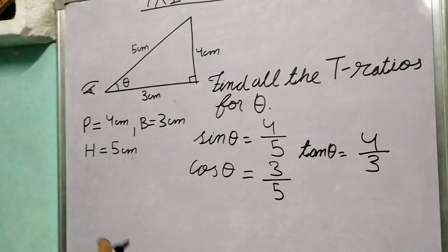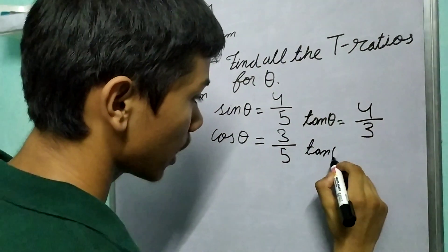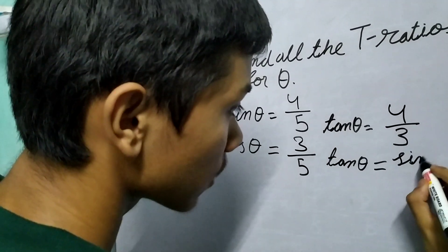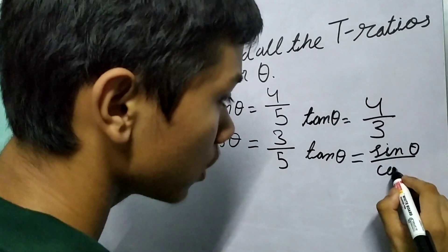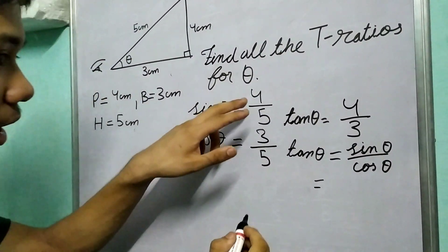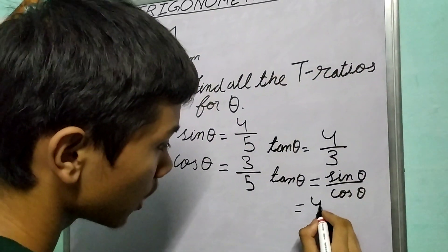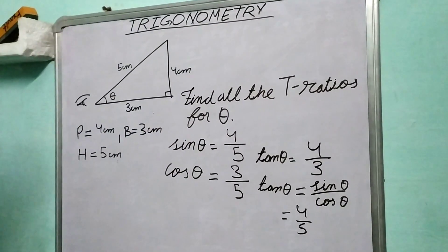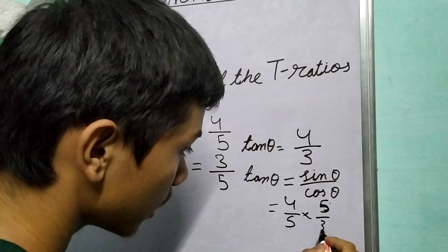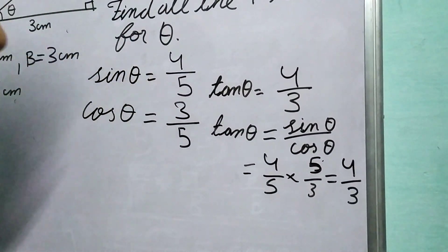Now another thing that we could have done is using the property we just derived. Tan theta is sin theta upon cos theta. So we get it as 4 by 5 divided by 3 by 5, so into 5 by 3, and get the same result, 4 by 3.